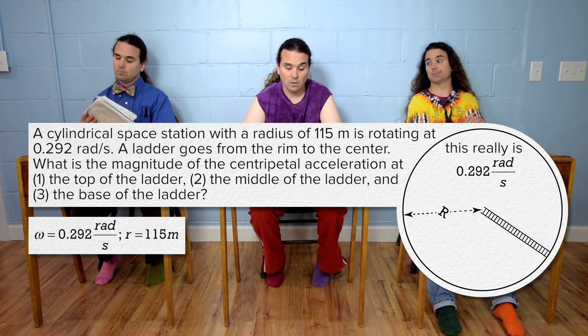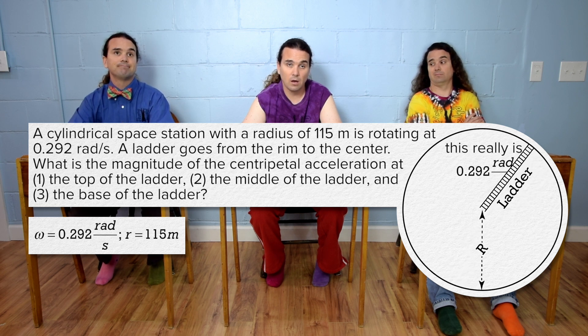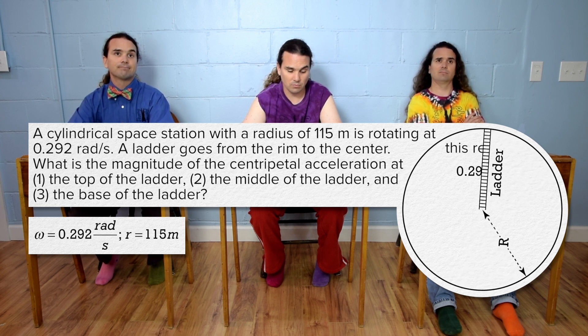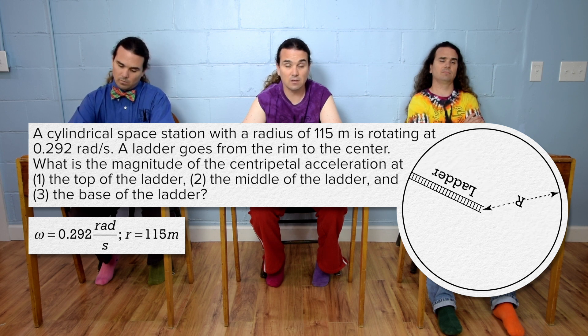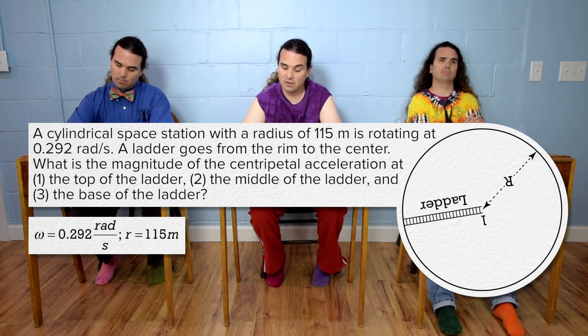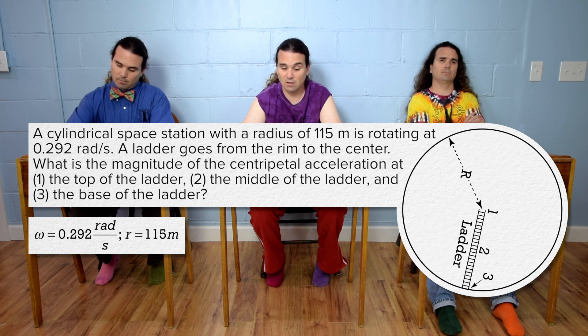Bobby, please. A ladder goes from the rim to the center. What is the magnitude of the centripetal acceleration at 1, the top of the ladder, 2, the middle of the ladder, and 3, the base of the ladder?